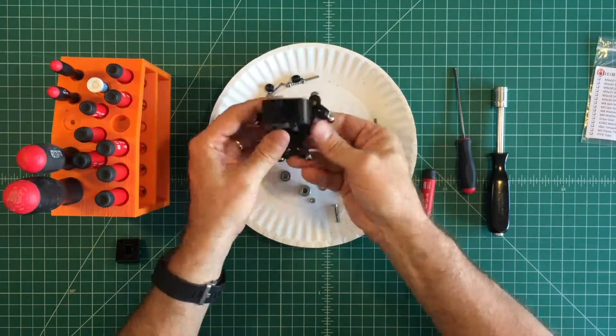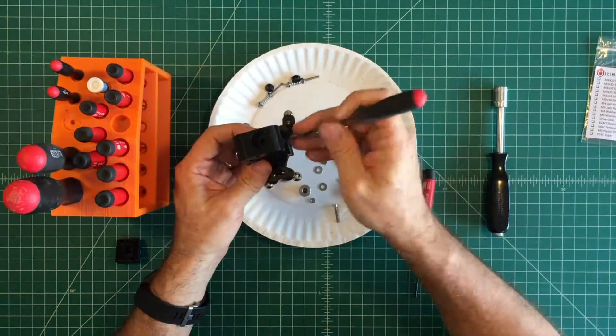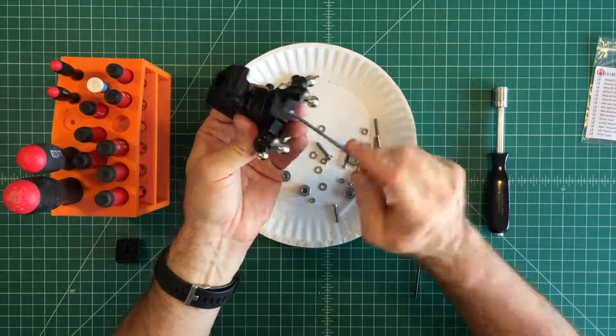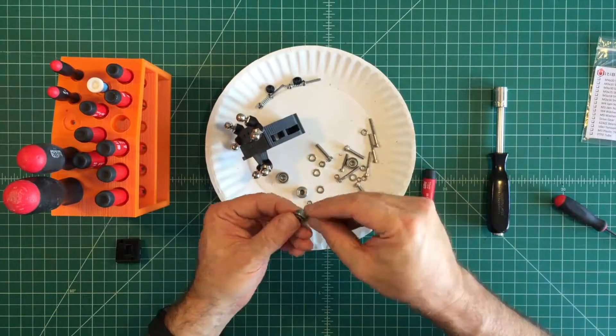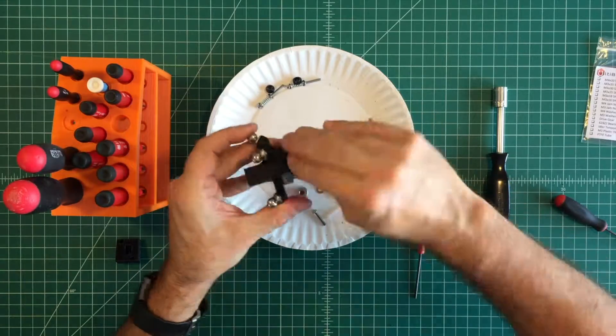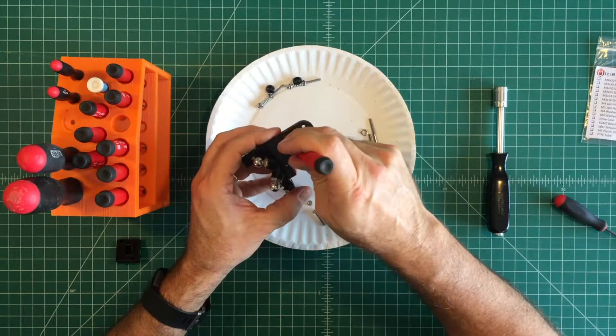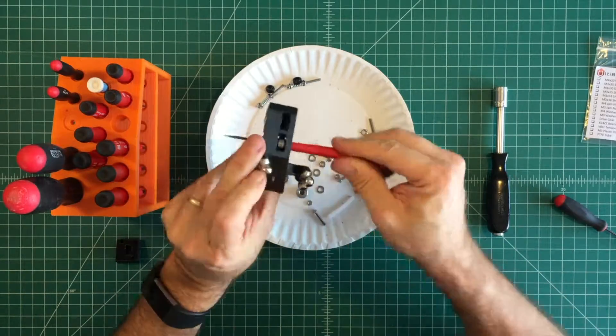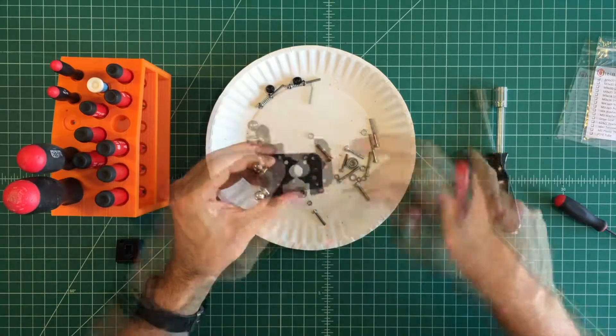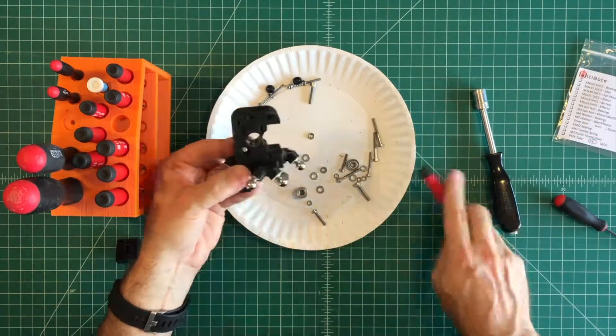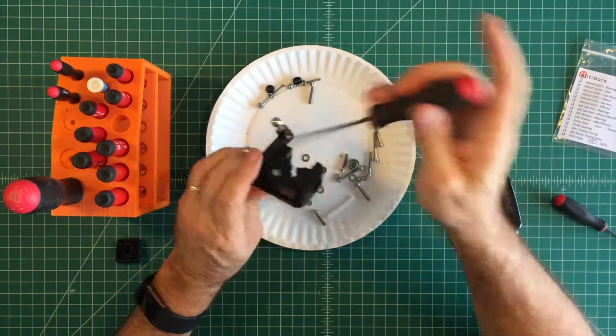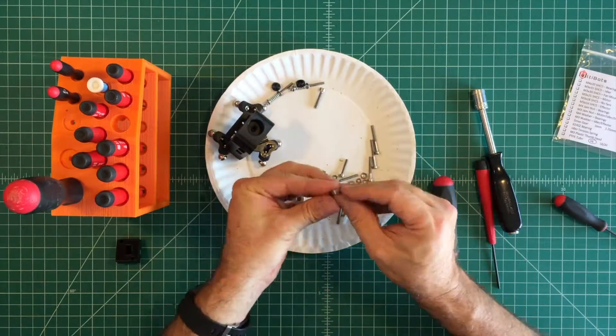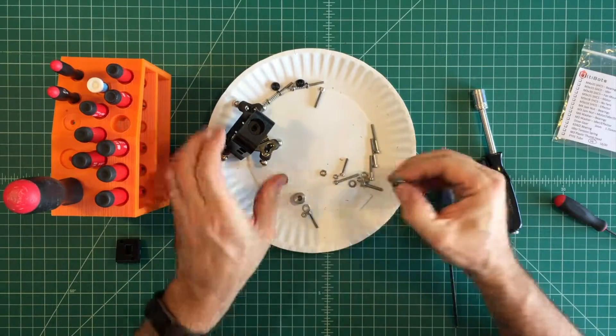Secure the other side with an M3x16 screw, washer, and nut. Next place two M4 washers on each side of the bearing. Insert this assembly into the bearing cavity and align with the screwdriver. Insert the M4x20 screw and secure with an M4 nut. Repeat this process for the remaining bearing assembly.